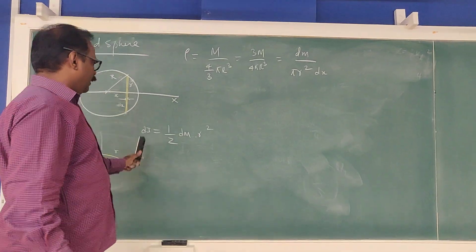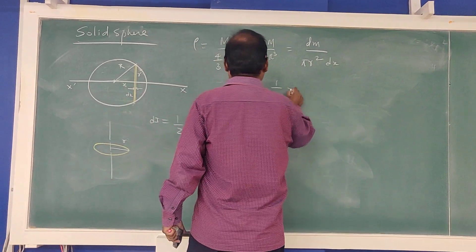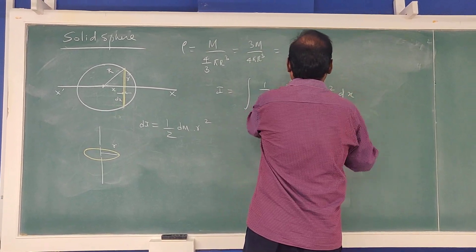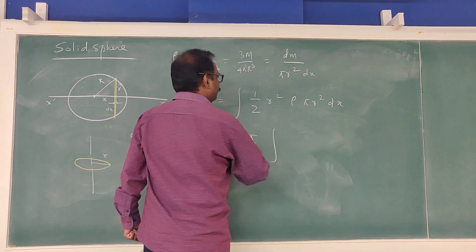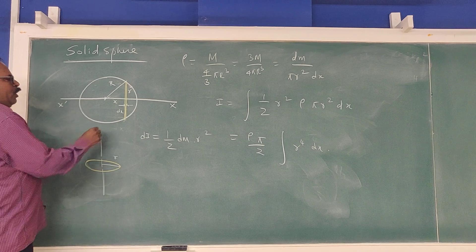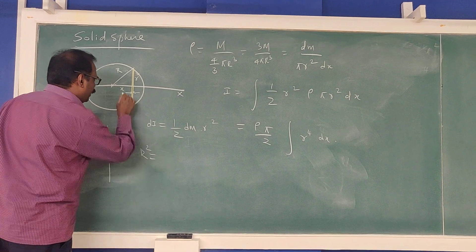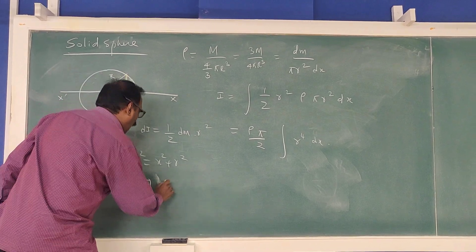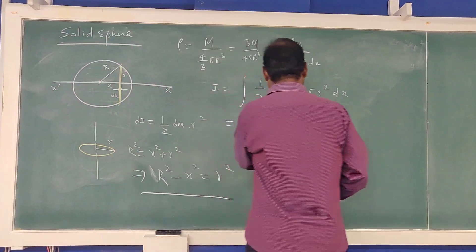The total moment of inertia I = ∫dI = (ρπ/2) ∫r⁴ dx. From the right-angle triangle, R² = x² + r², so r² = R² − x². Therefore r⁴ = (R² − x²)². Substituting: I = (ρπ/2) ∫(R² − x²)² dx, with limits from −R to +R.